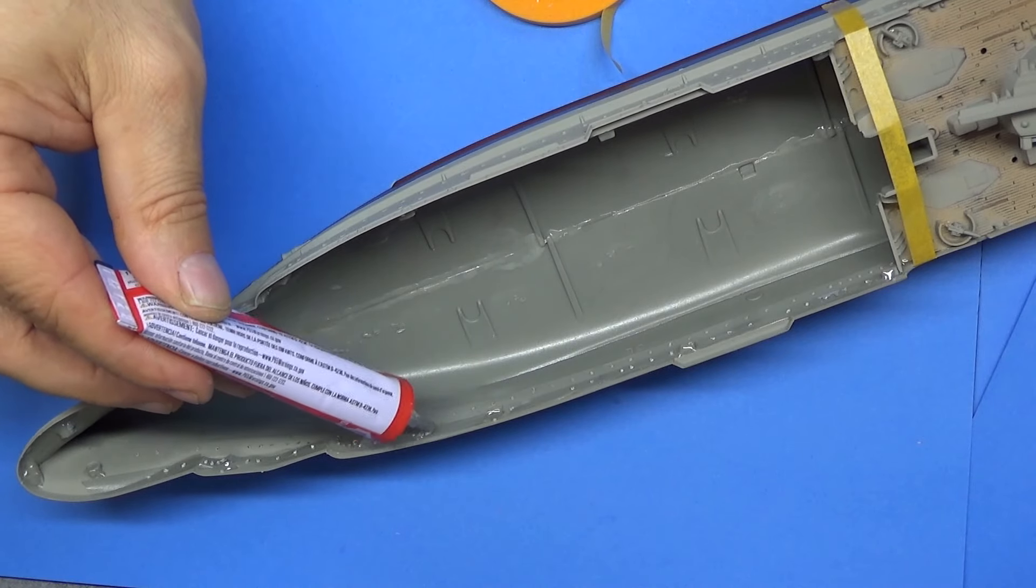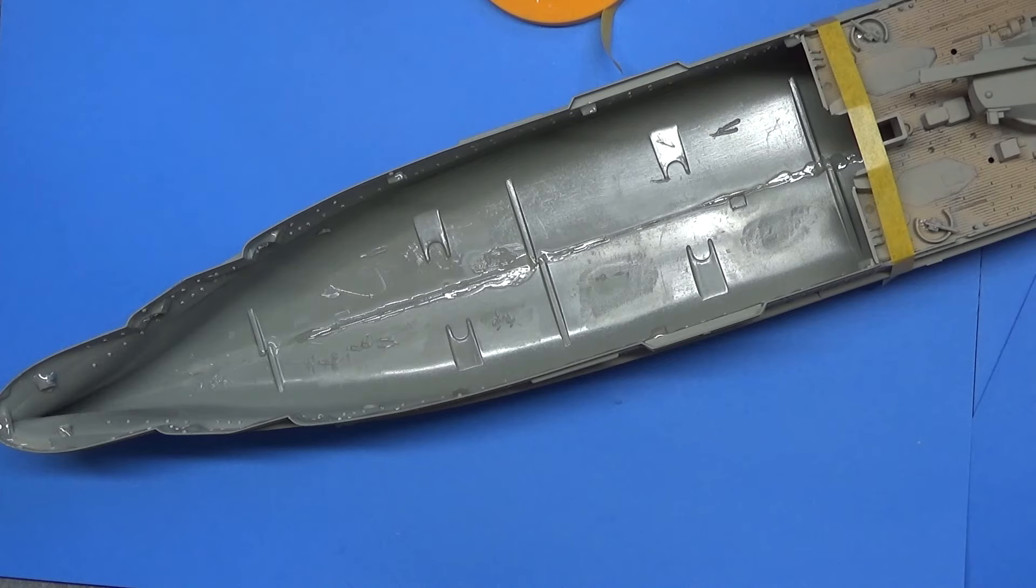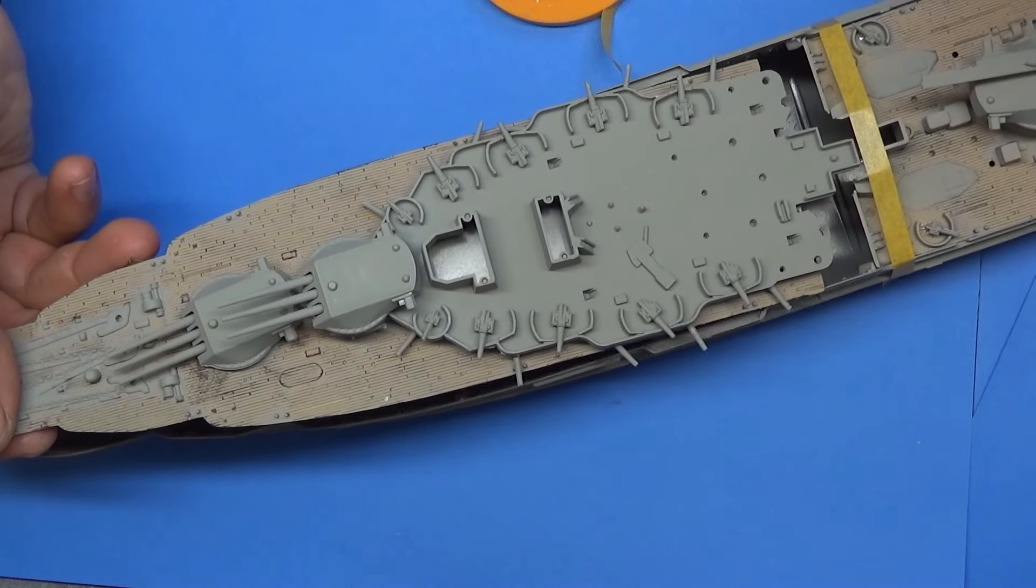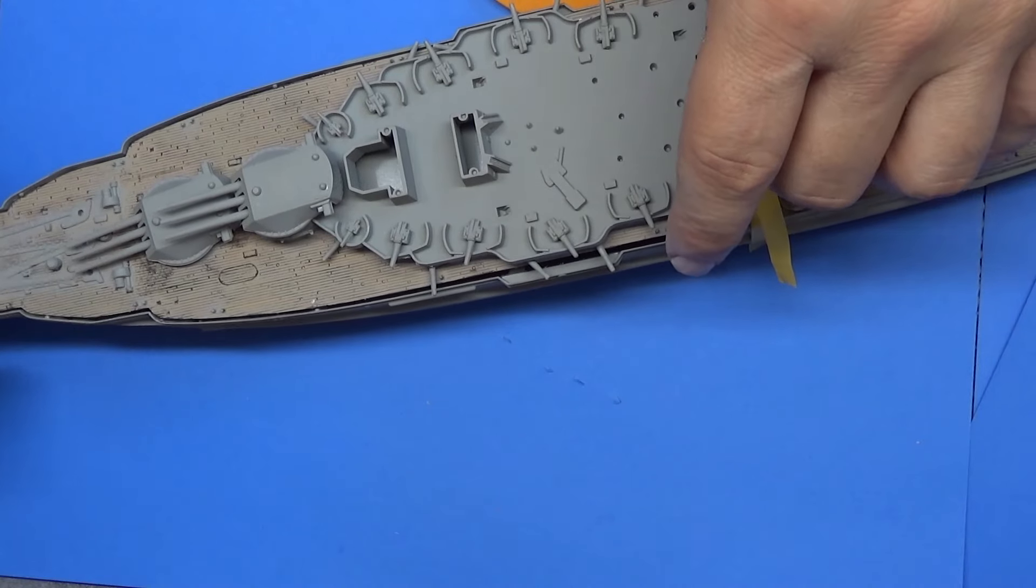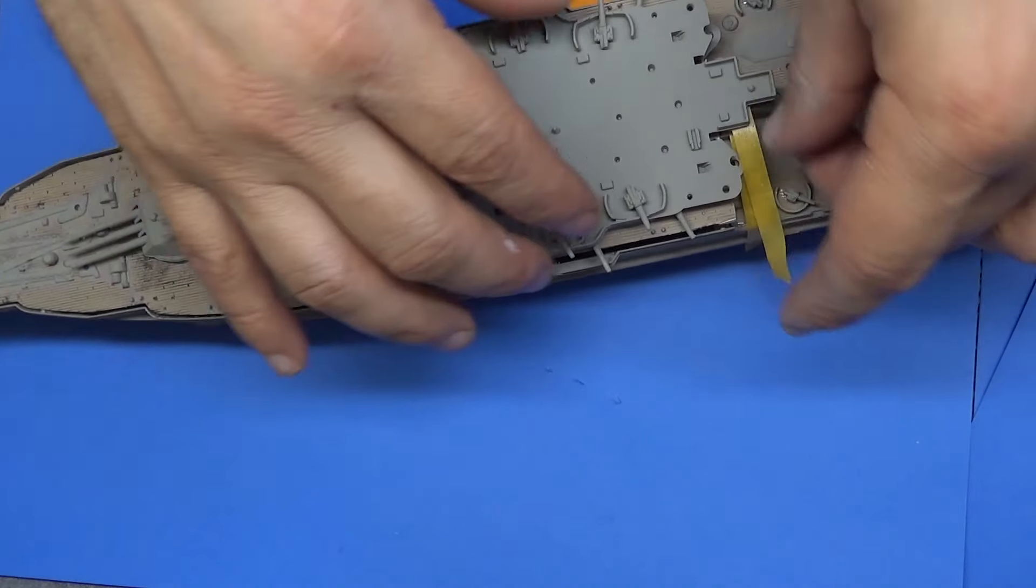So you see all the glue going down there. Here's that hull. See this has to fit like that. So we're going to take this tape off. Make sure it fits. Place it down properly. Get our tape out of the way.